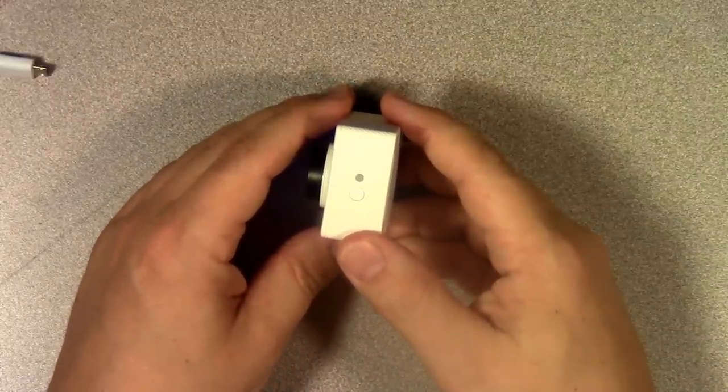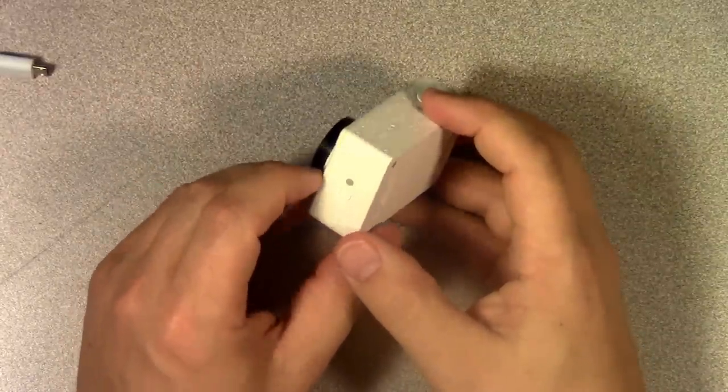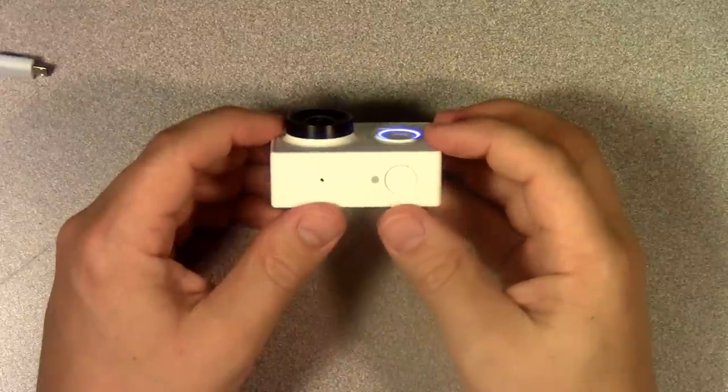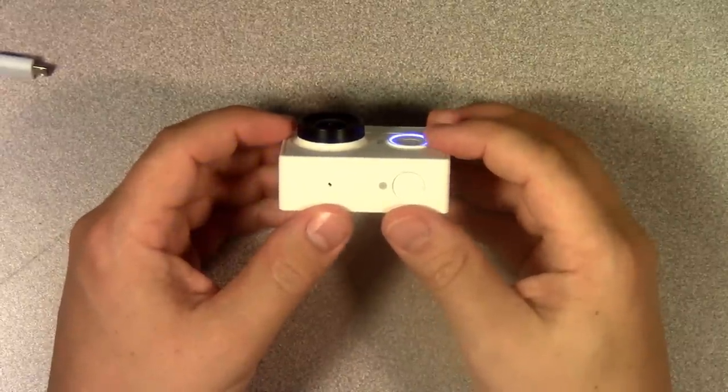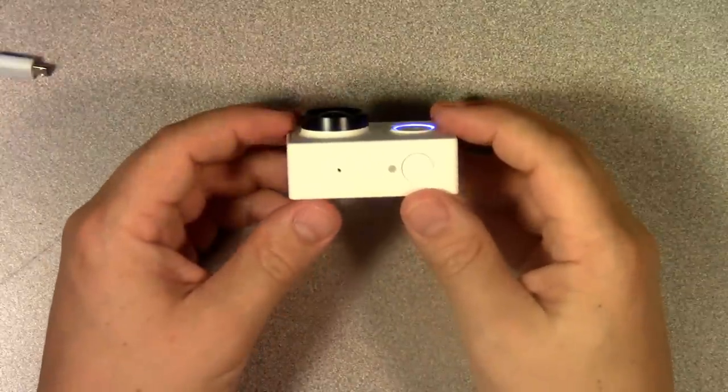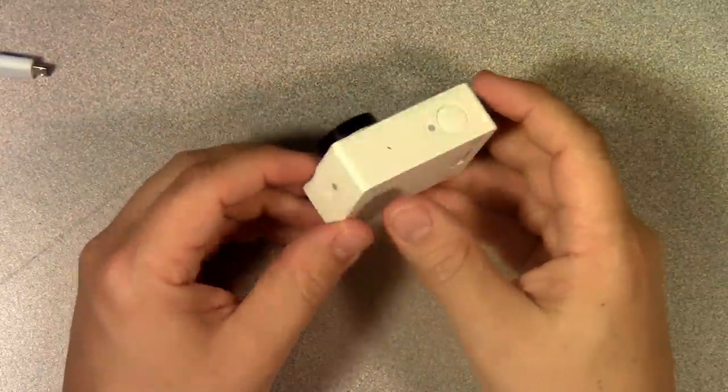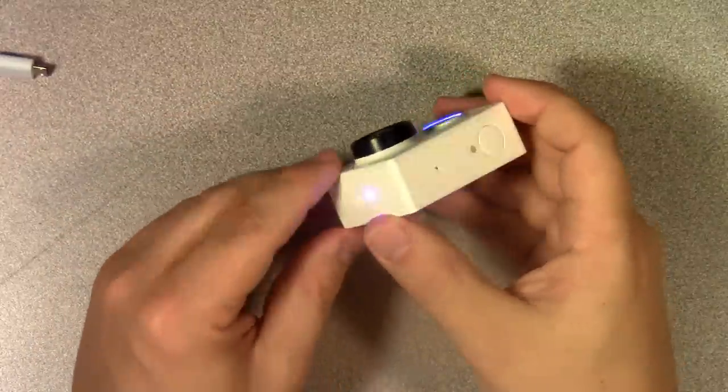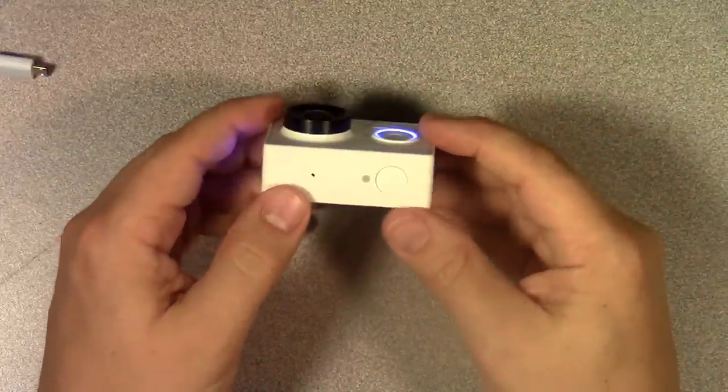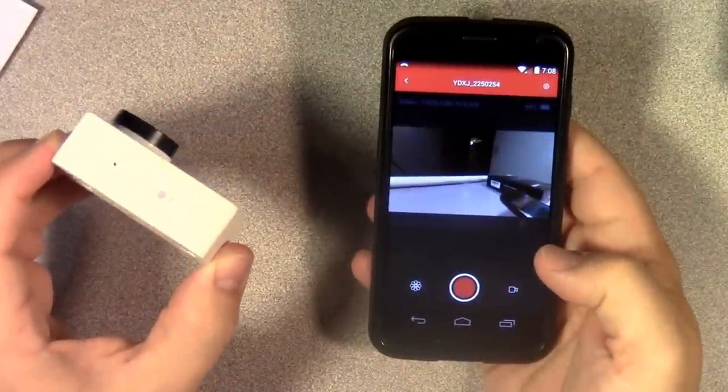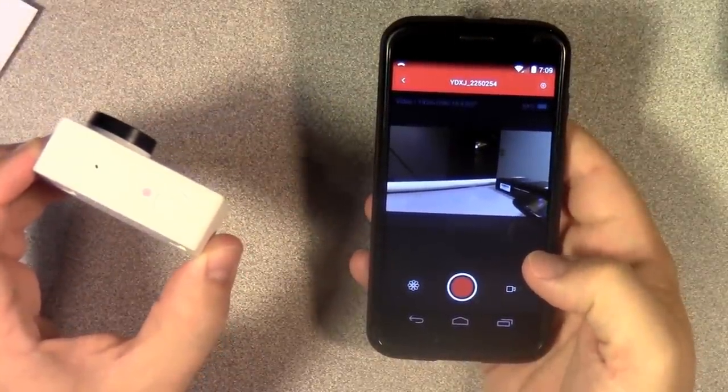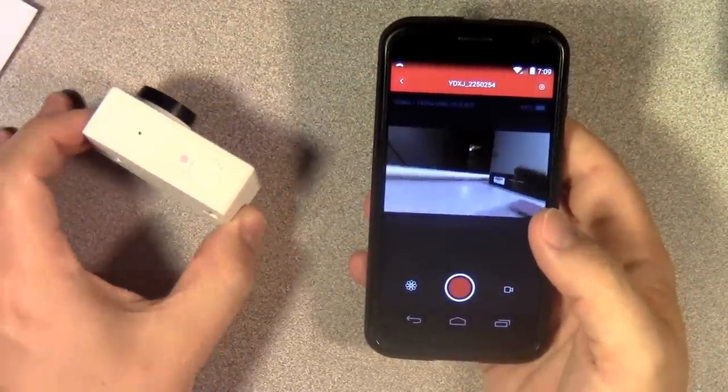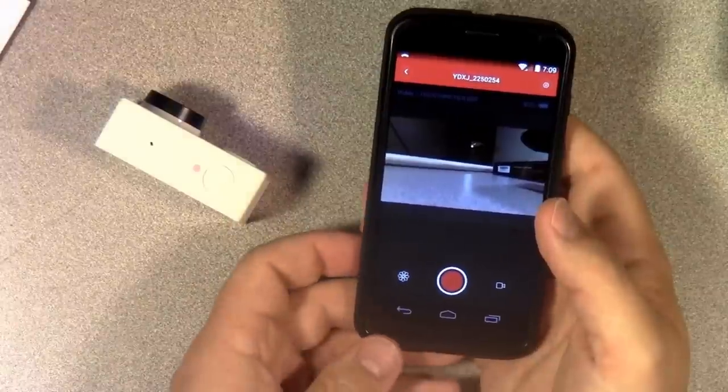And so what you really need to do is go to the App Store or Google Play, whichever the case may be, depending on whether you have Android or an iPhone, and download the Xiaomi Yi camera app. That will allow you to connect to this when it's in Wi-Fi mode. And you can do a lot of things with that app. For one thing, it gives you a viewfinder, which of course this camera doesn't have, so you can see what the camera is currently looking at.